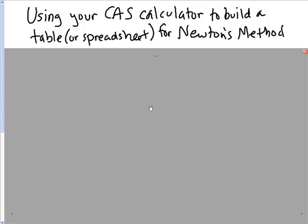What I want to show you in this video is a way that you can use your CAS calculator to build a table or spreadsheet for Newton's method. I should say at this point that I am not going to try to teach you Newton's method here — that is for another lesson. What I want to teach you is how you can use your calculator to set up a table that you can save, so that if you have an AP exam or some other exam where you need to find approximations very quickly, you can have this table already set up.